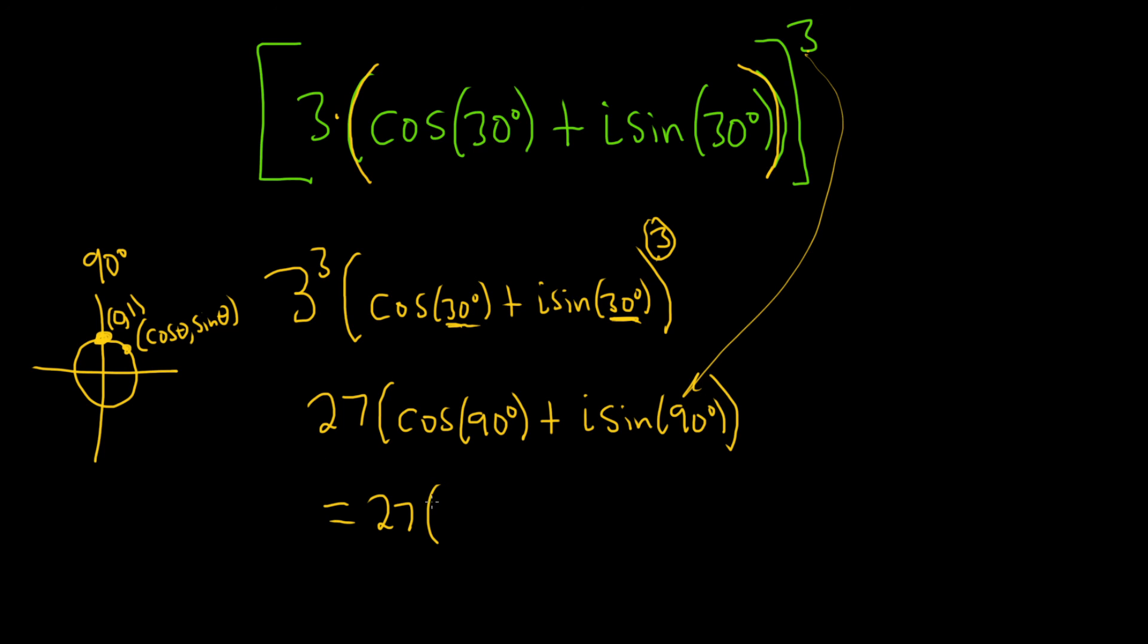So cosine is the x-coordinate. So this would be 0, plus, and then the y-coordinate is 1, that's the sine, so plus i times 1. So this is equal to 27i, and that would be the final answer.